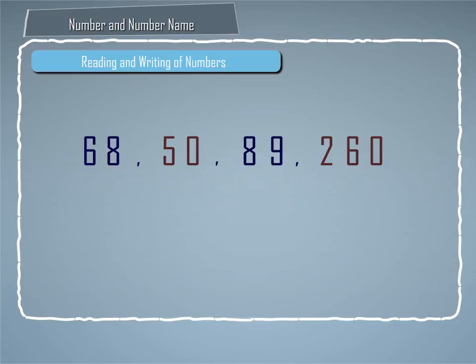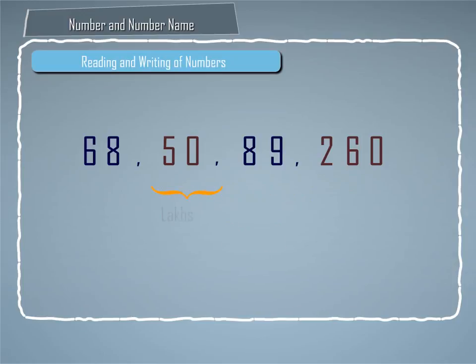The first period, called the units period, consists of three digits, while each of the next periods — called the thousands period, lakhs period, and crores period respectively — consists of two digits.